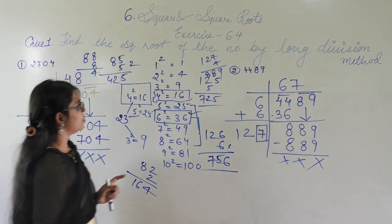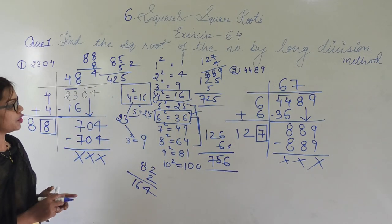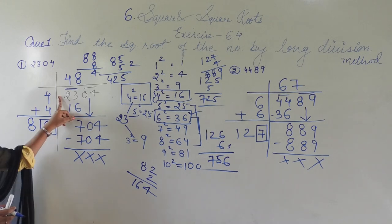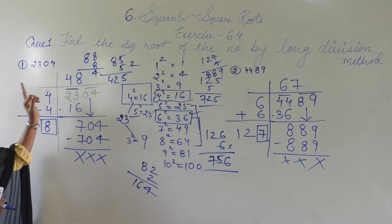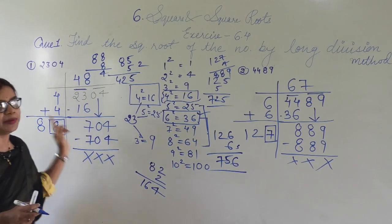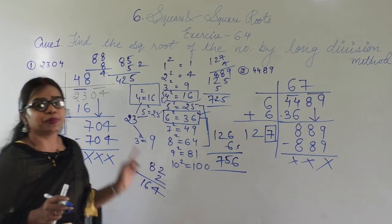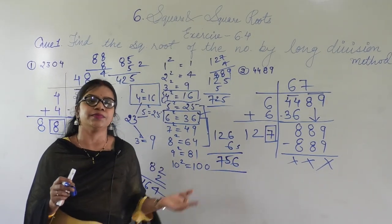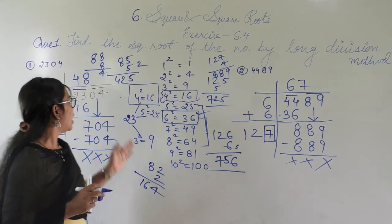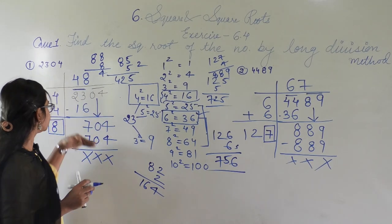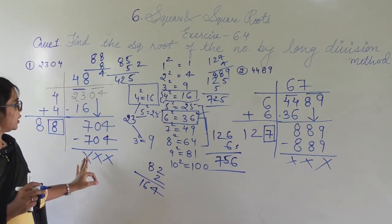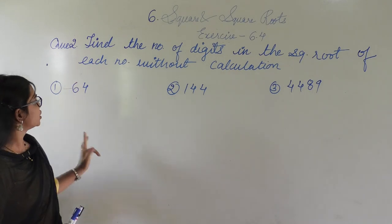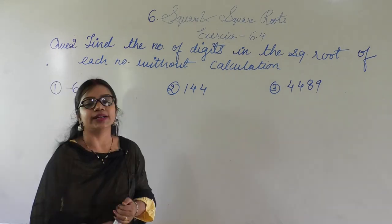This is the long division method. To summarize: first write the number in the long division format, then start making pairs from the right. After pairing, multiply step by step choosing a number such that you get the same or less than the current value. Add the divisor at each step, and continue until the remainder is 0.